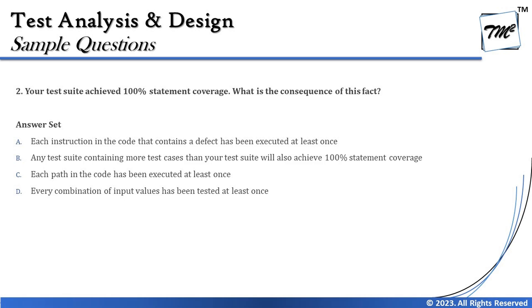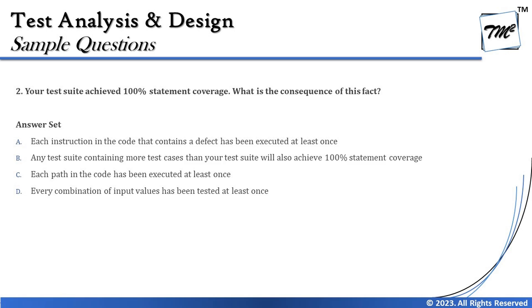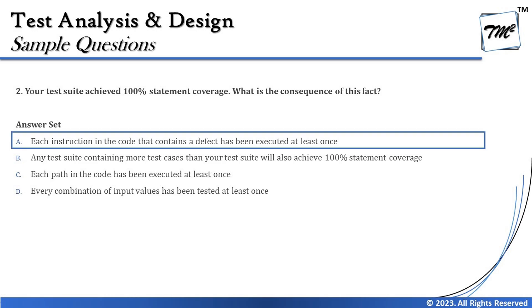Option D says: 'Every combination of input values has been tested at least once.' That is exhaustive testing, and the principle from Chapter 1 states that exhaustive testing is impossible or impractical to conduct. So option D can be ruled out as it contradicts Principle 2. Therefore, the right answer is A: each instruction in the code that contains a defect has been executed at least once.